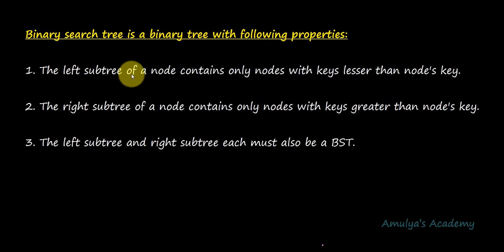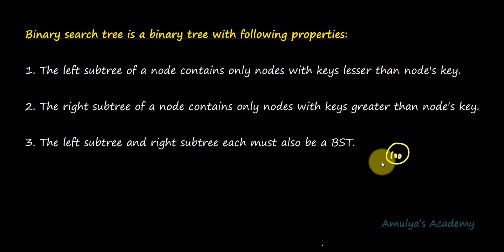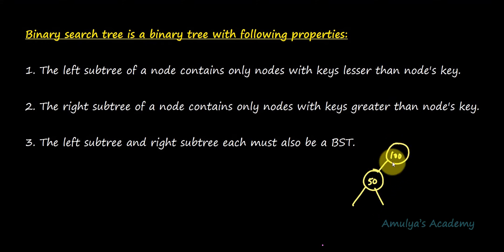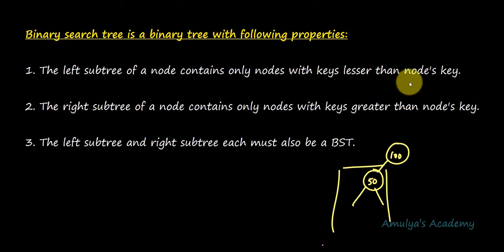The next property is the left subtree of a node contains only nodes with keys lesser than the node's key. For example, if I have a node with value 100, the key is nothing but the node's data. Now the left subtree of this node should contain those nodes whose keys are less than 100. All nodes in the left subtree should have keys less than 100.